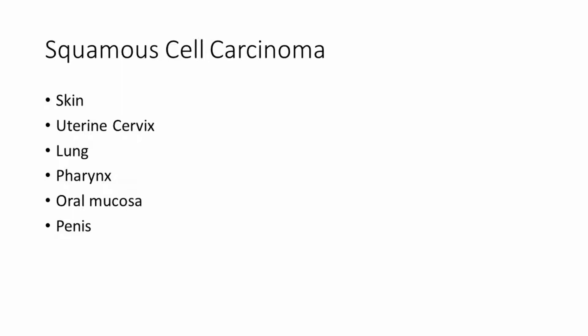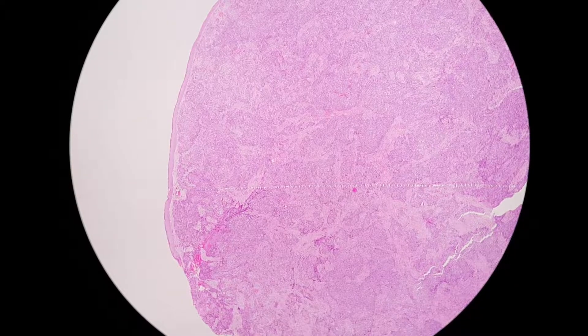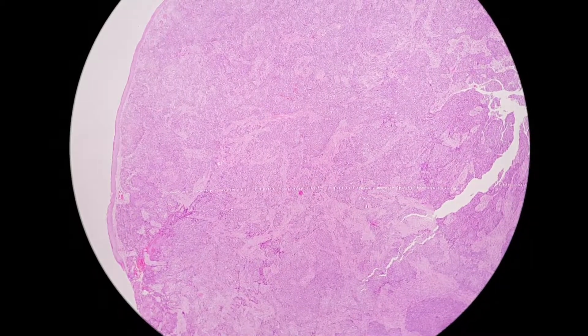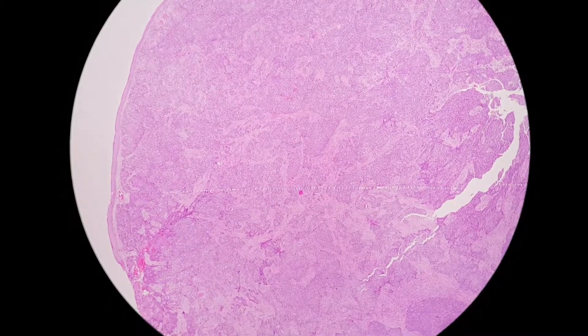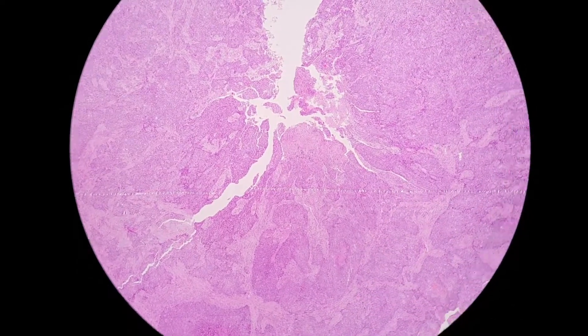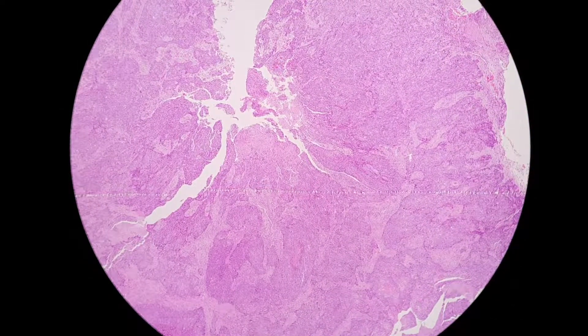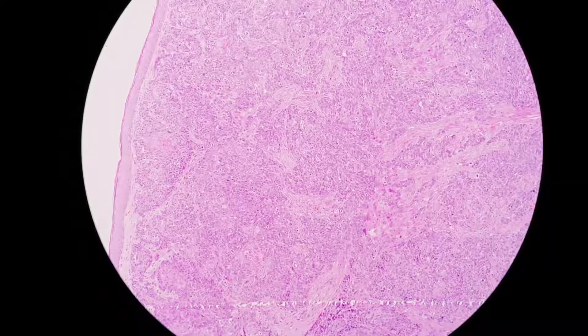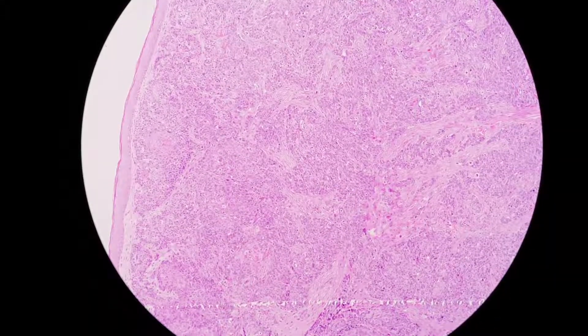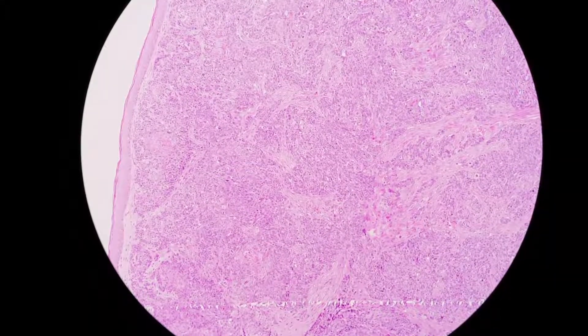Let us view the microscopic features of squamous cell carcinoma. This is squamous cell carcinoma of the skin. You can see the overlying skin on the left, and the lesion is within the dermal layer. Under medium magnification, we can see that the malignant cells are arranged in clusters and sheets.